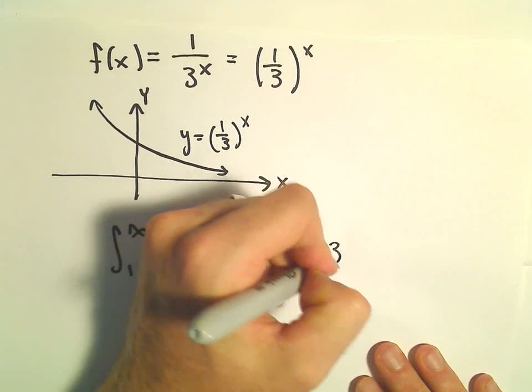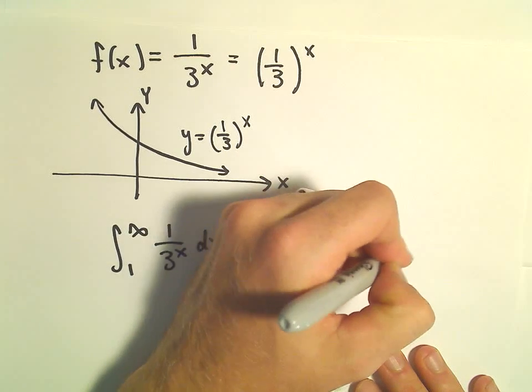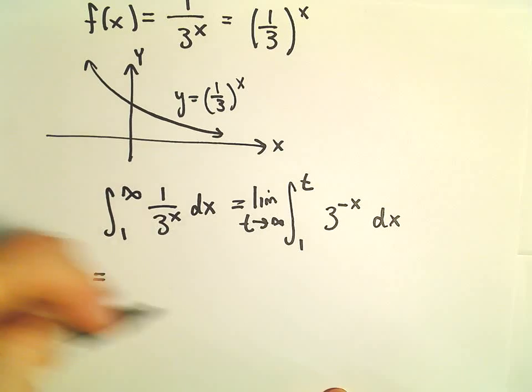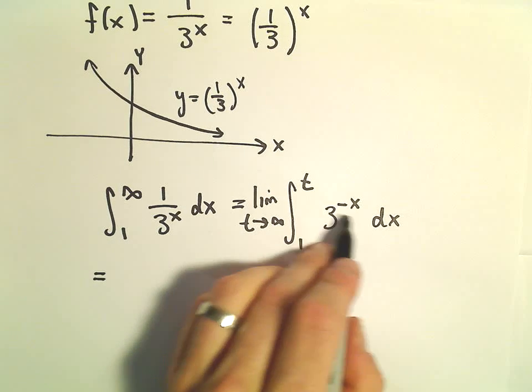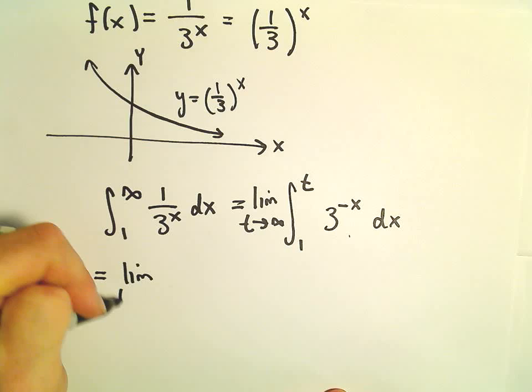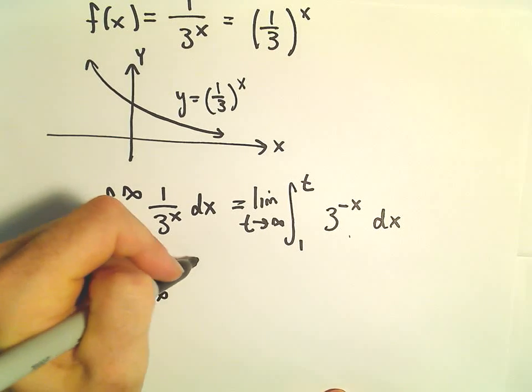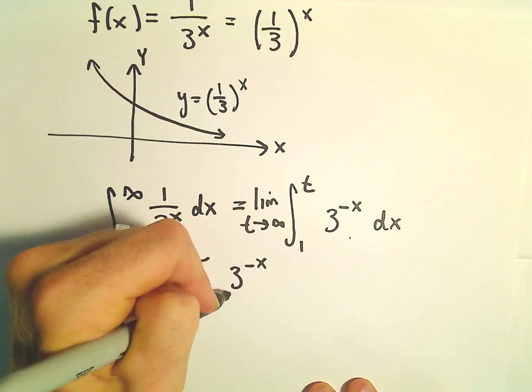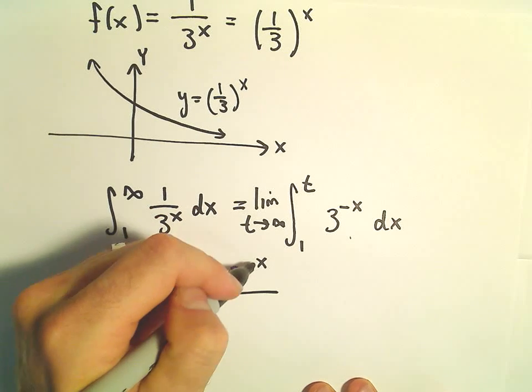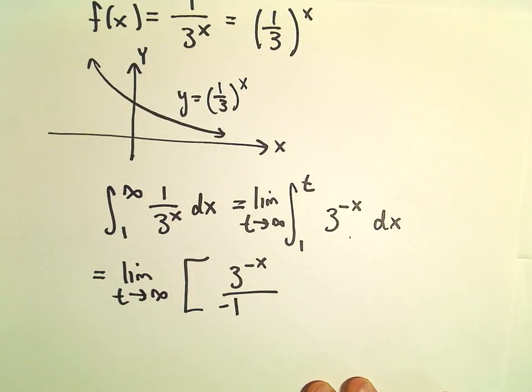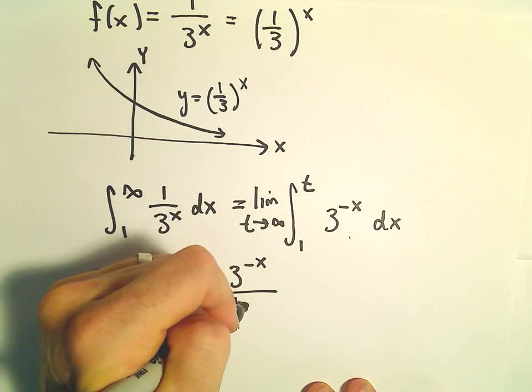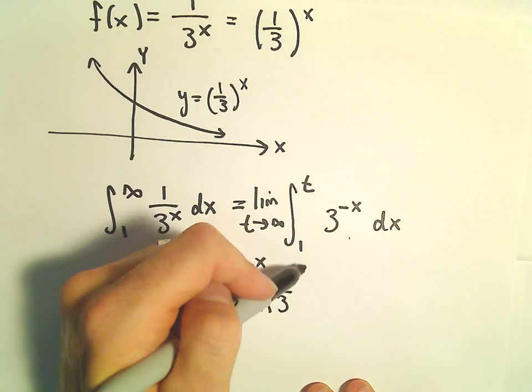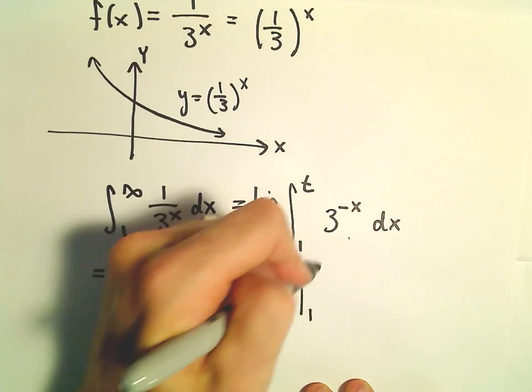The 3 to the x, I'm going to bring that upstairs and make it 3 to the negative x. So when we integrate this, you can just do a u substitution, let u equal negative x. After we do our u substitution, we'll get 3 to the negative x. We'll have to divide by the coefficient, we'll end up getting a negative 1. And recall, for exponentials, you also have to divide by the natural logarithm of the base. So from 1 to t.